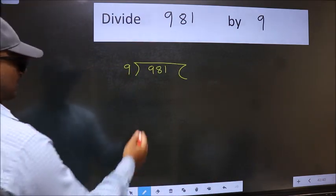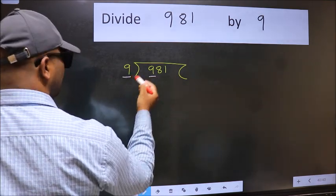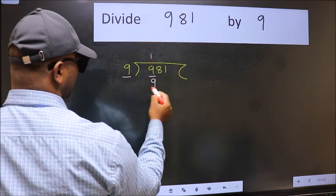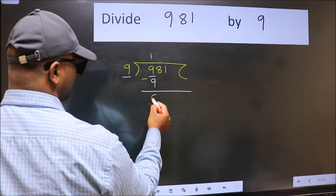Next, here we have 9 and here 9. When do we get 9 in the 9 table? 9 once 9. Now we should subtract. We get 0.